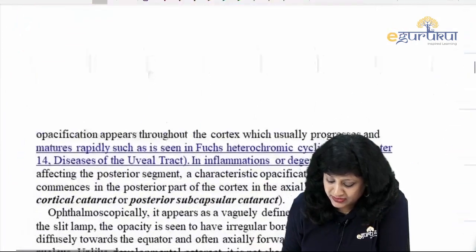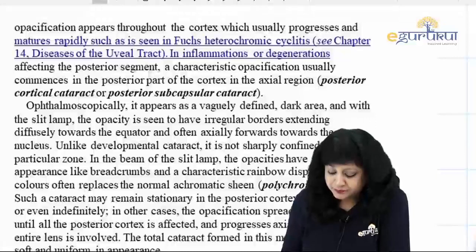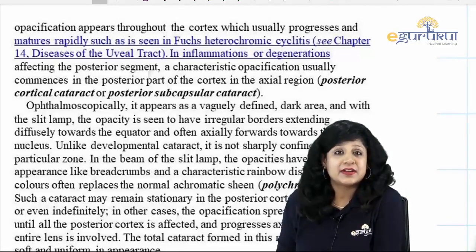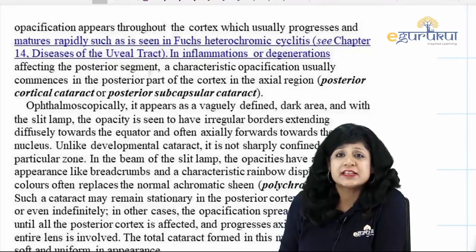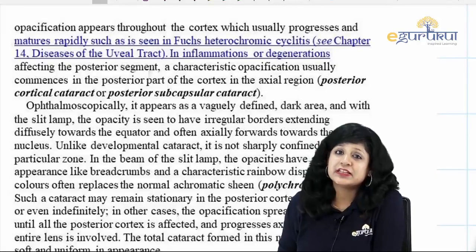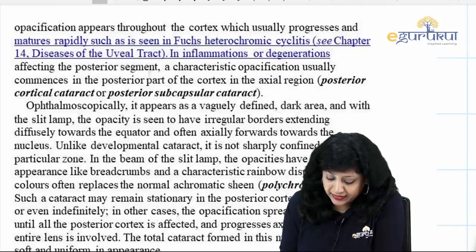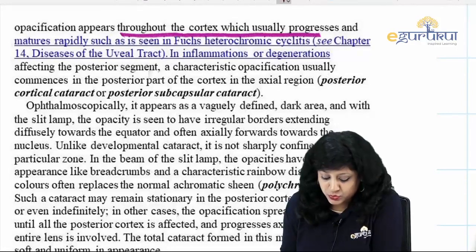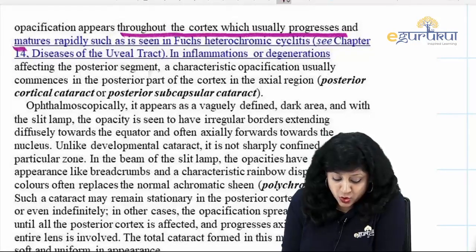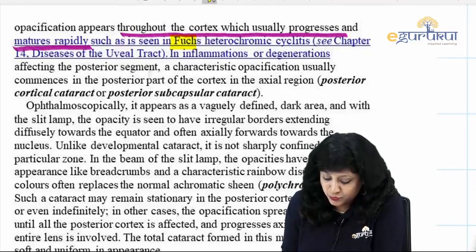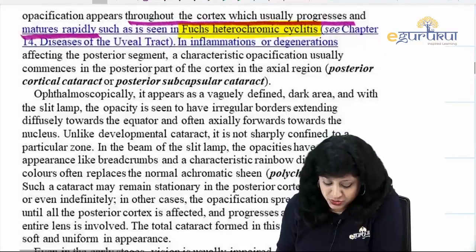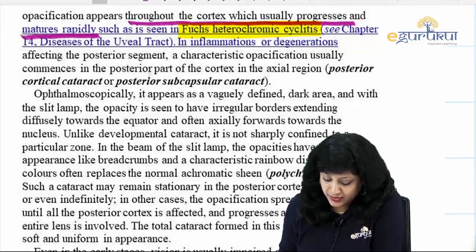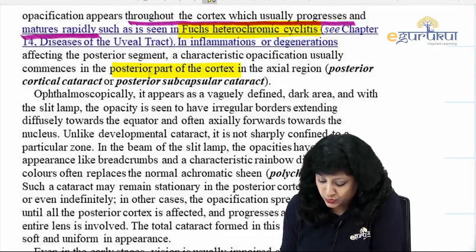After inflammations of the anterior segment, a non-descript opacification appears. These opacities develop throughout the cortex, which usually progress and mature rapidly. For example, we have Fuchs heterochromic iridocyclitis, which you will deal with in the uveal tract. In degenerations of the posterior segment, a characteristic opacification can start in the posterior part of the cortex in the axial region — that is your posterior cortical or posterior subcapsular cataract.